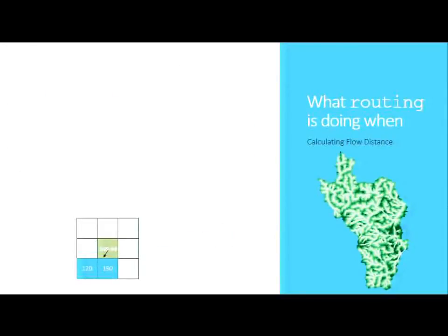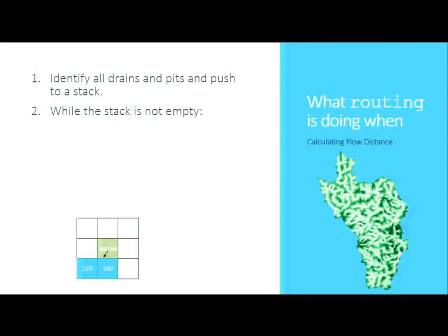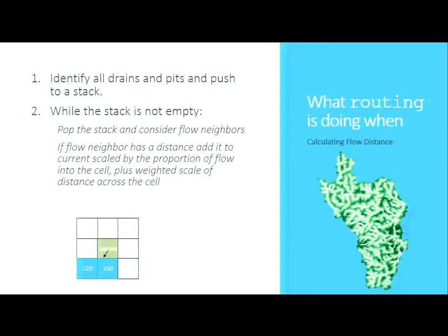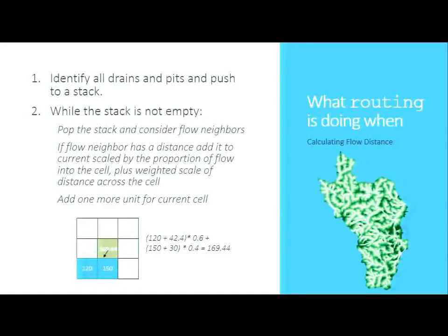For flow distance — or 'distance to stream' — the tricky part with D-infinity is that a cell drains to potentially two downstream cells, so the downstream distance is a weighted average between the two. If it's 120 units to the left and 150 units to the right, the algorithm weights by the flow proportion vector. Also, flowing to a direct neighbor is 30 meters, but flowing diagonally is 30 times the square root of 2, accounting for the hypotenuse.